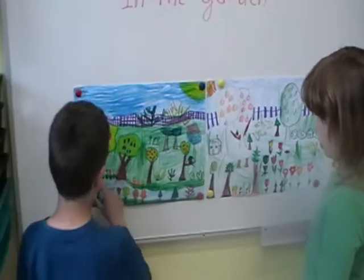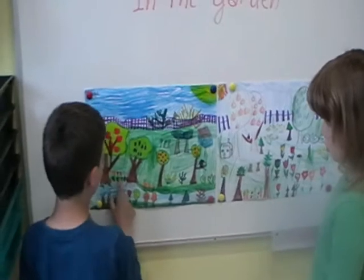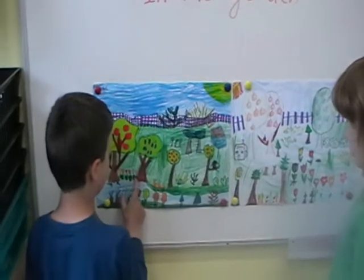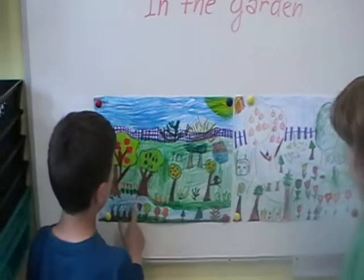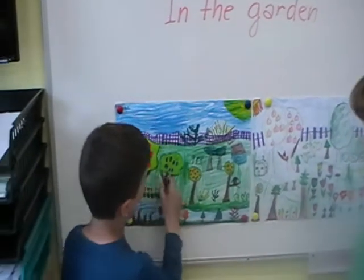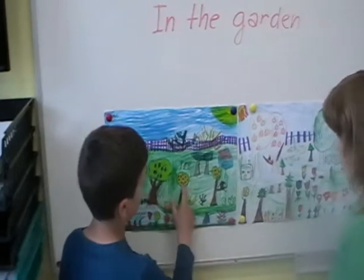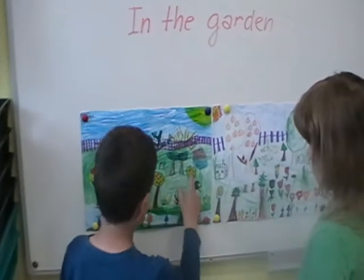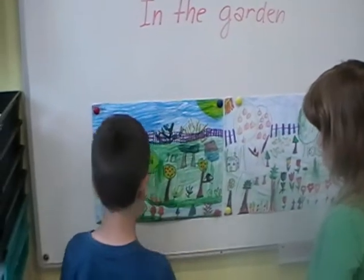There are one, two, three, four, five, six tulips. And apple tree, plum tree, apple tree, cherry tree.